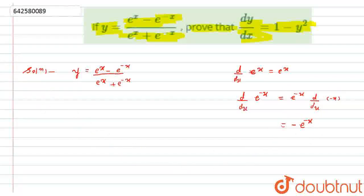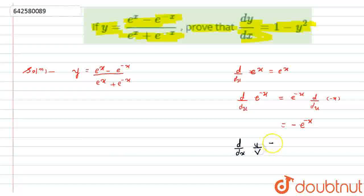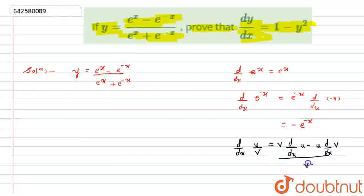So according to this, I am going to expand this. There is one more formula: d by dx of u upon v is nothing but equal to v times d by dx of u minus u times d by dx of v, that whole divided by v square.